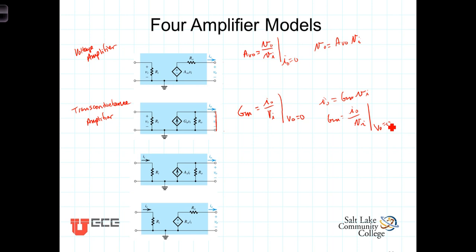The term transconductance comes from the units of G sub m. The units of G sub m are amps per volt, which is 1 over resistance. Resistance has the units of volts per amp, so this is 1 over resistance, which is referred to as conductance.